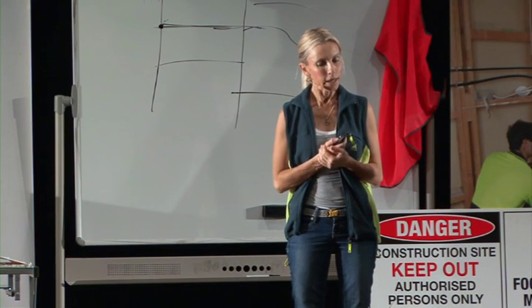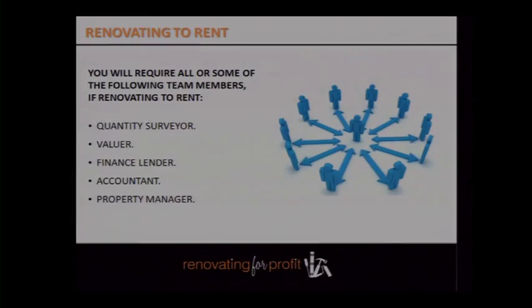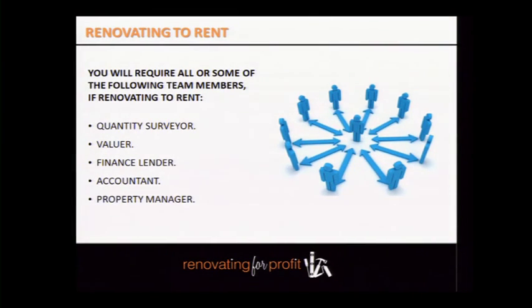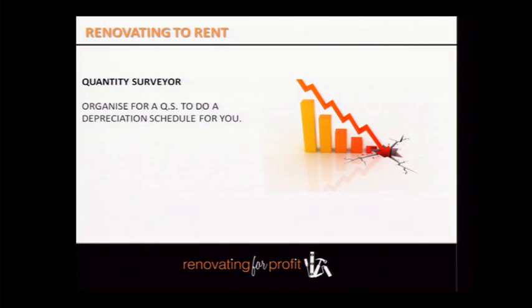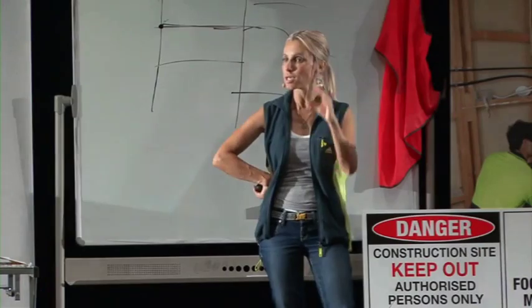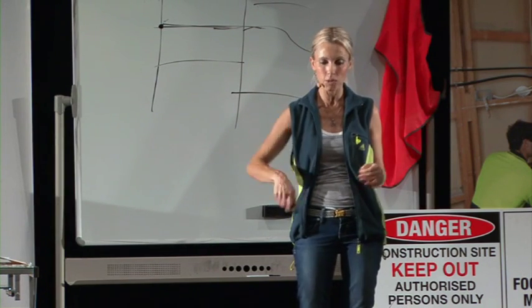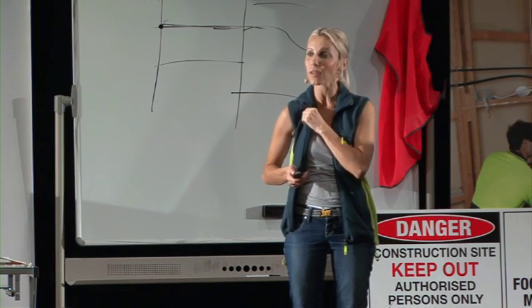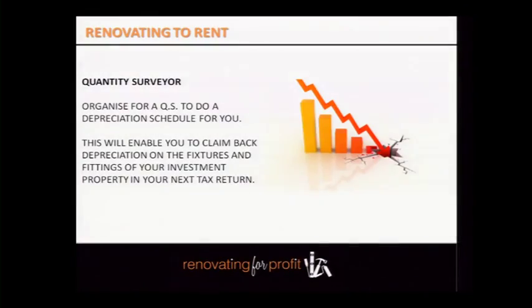If you're going to buy-renovate-and-rent, you'll need a quantity surveyor, valuer, finance person, accountant, and property manager. You need a quantity surveyor because all the new fixtures and fittings you've installed can be claimed back from a tax perspective through a depreciation schedule. For example, the new cooktop you installed can be depreciated — a certain amount written off as tax-free dollars every single year, until eventually it reaches zero value.